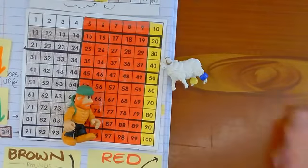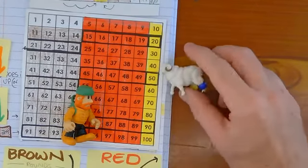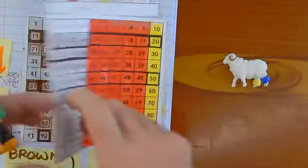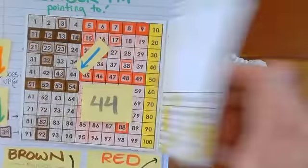You can say, is it 42? And the ram will say, nope. Is it 44? Yep. And then you could do the big reveal. Ta-da.